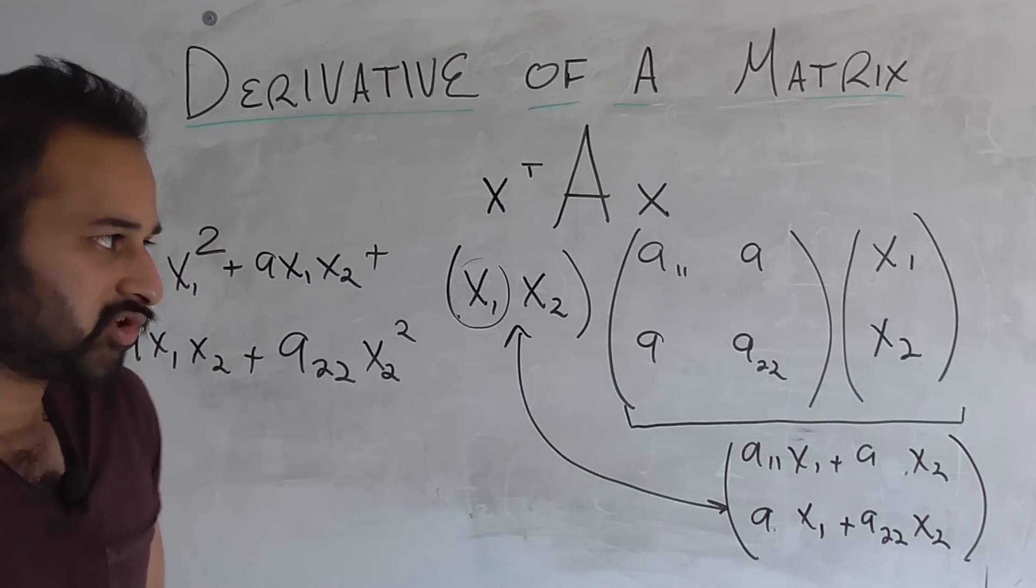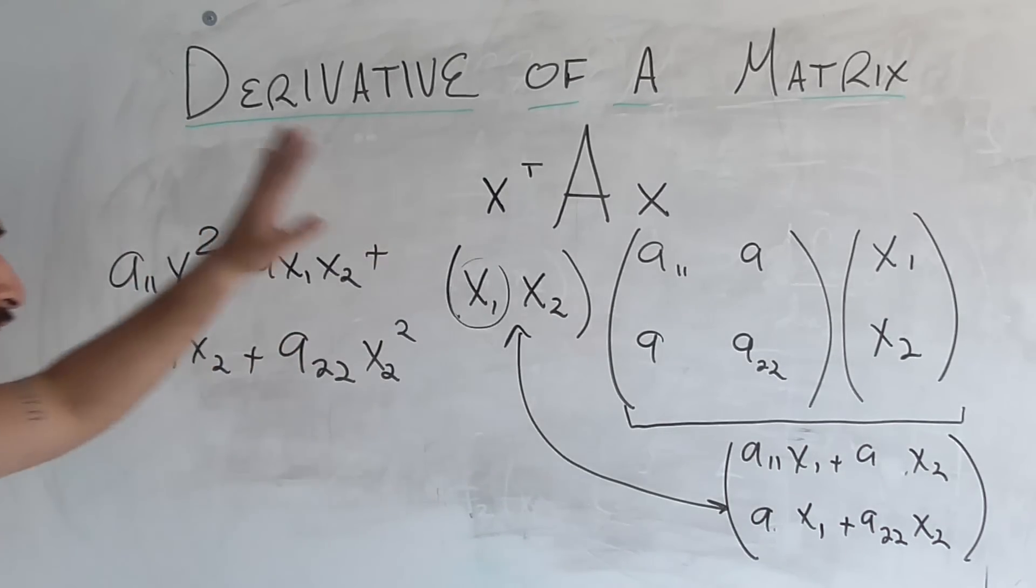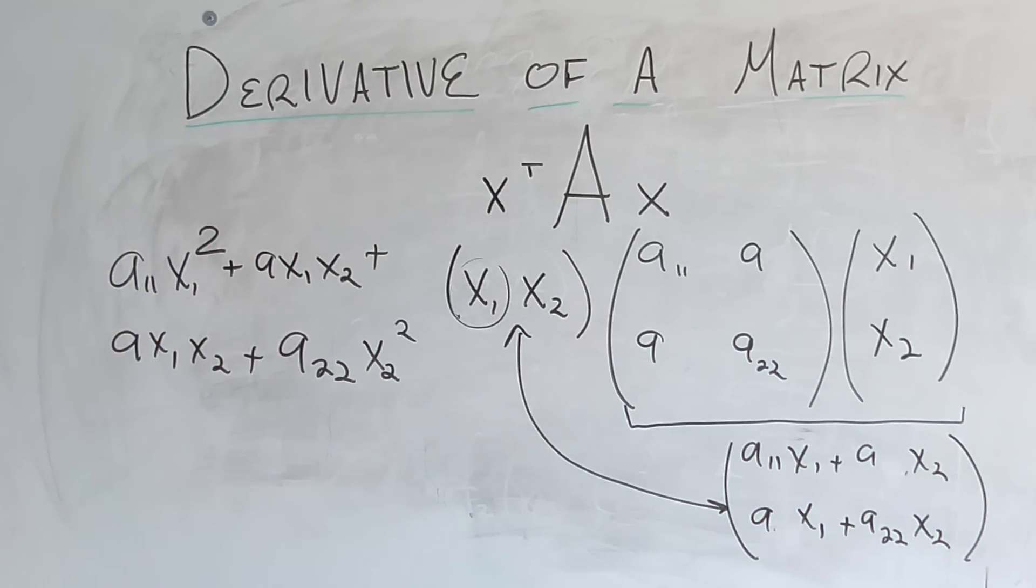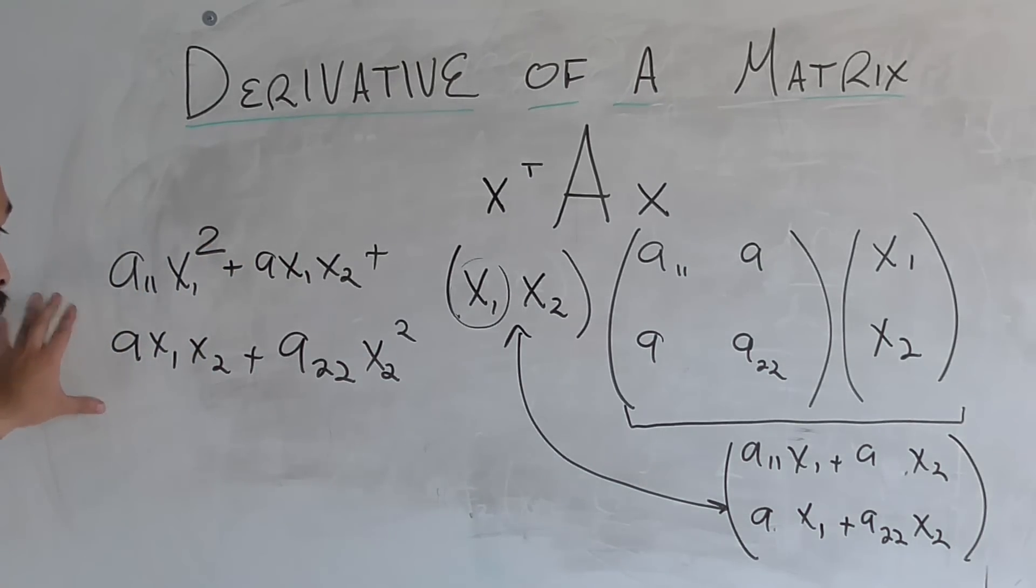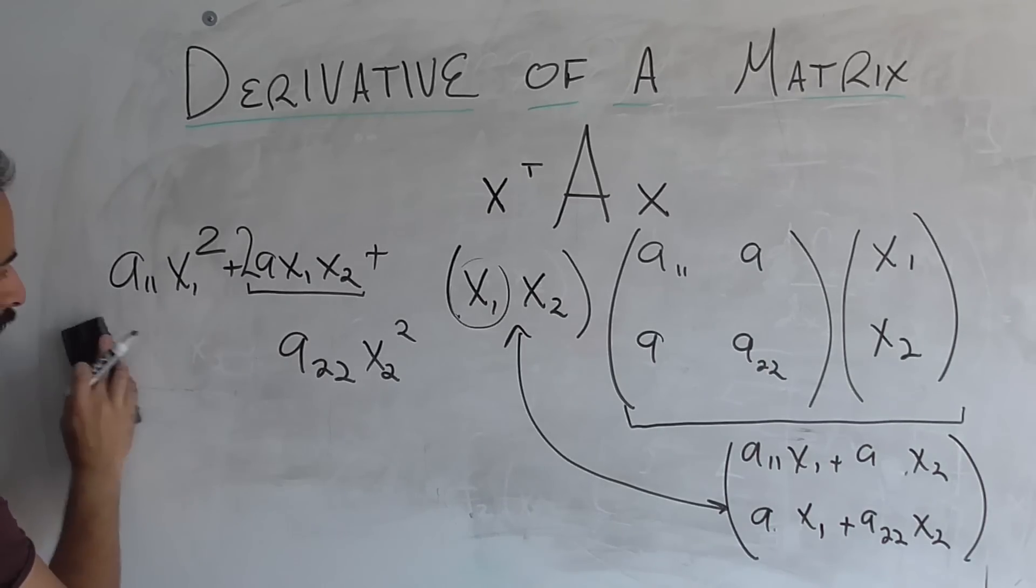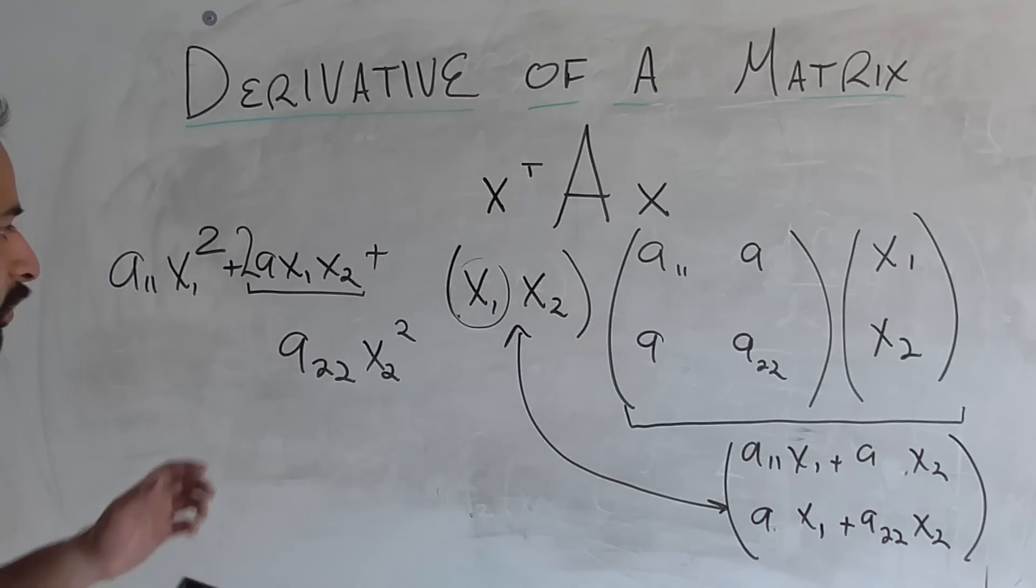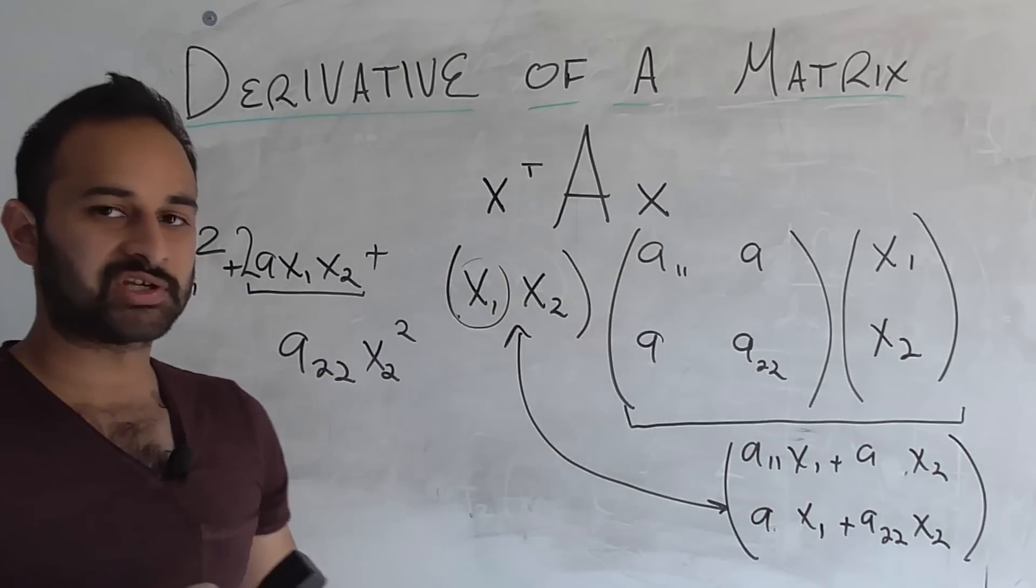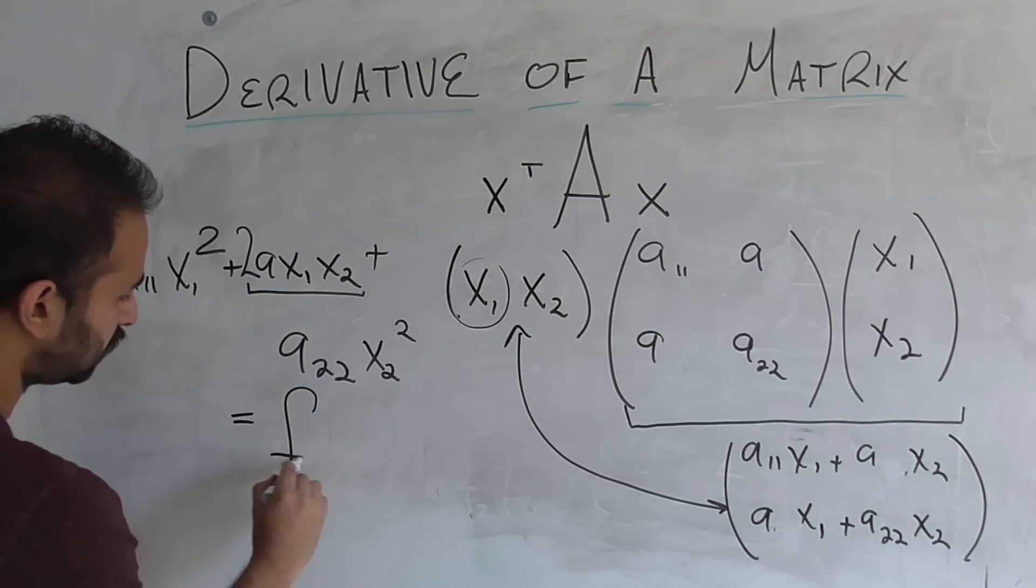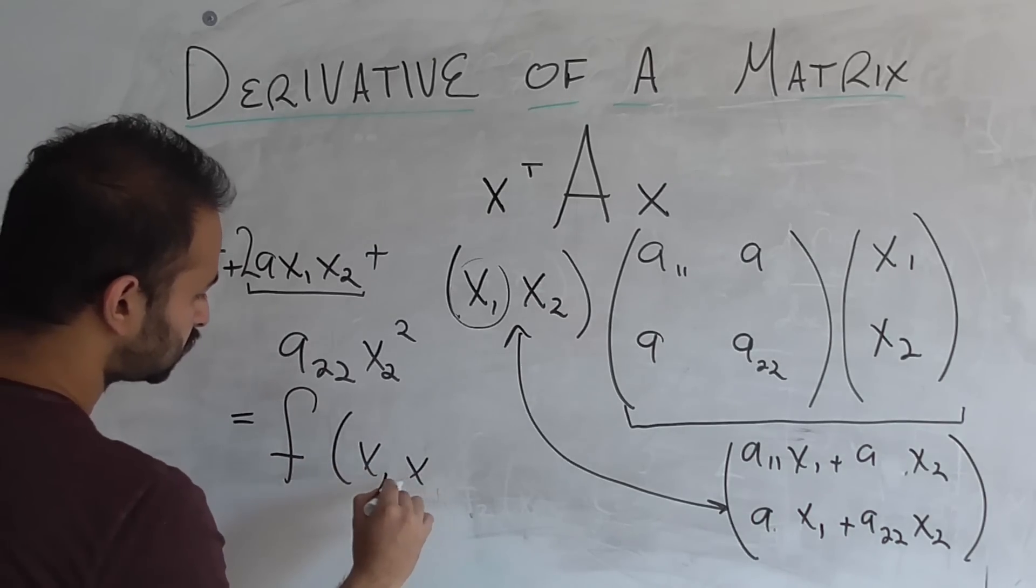By the way, if the pace is too fast for you, please take a minute to pause and convince yourself everything on this board is accurate. Once you've convinced yourself of that, let's move on. We see we have an ax1x2 term here and also here, so we can just put two of them. Simplify that. The reason we were able to do that is because of the symmetricness of that matrix.